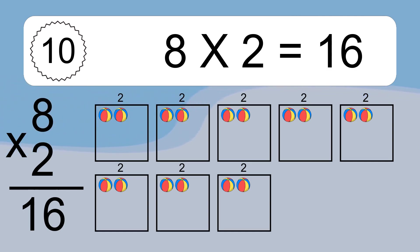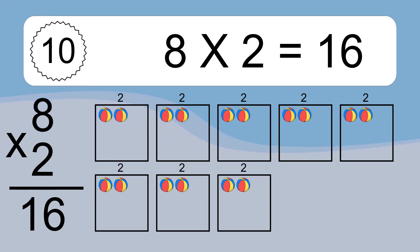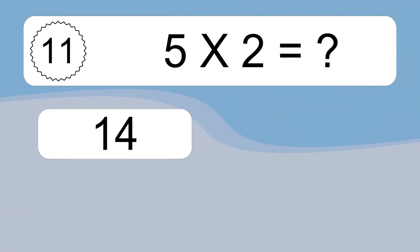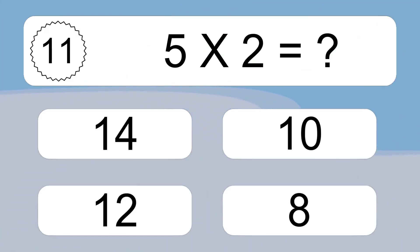We have 8 boxes, and each box has 2 colorful balls inside. If you count all the balls in all the boxes together, you will have 8 times 2 balls. This equals 16 balls.